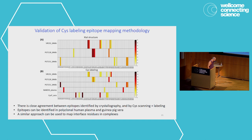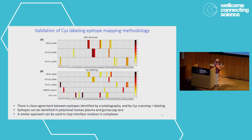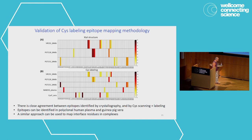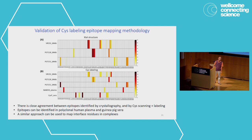This is the result when we did it with the HIV envelope. These are the epitopes from crystal structures for three different neutralizing antibodies, and these are the enrichment scores from our cysteine labeling experiment — they match up very well for all three antibodies. What we could do that you can't do with crystallography or cryo-EM is look in plasma and in neutralizing sera from small animals with antigens we had designed, to find out which epitopes were targeted. There is close agreement between epitopes for monoclonals identified by crystallography and by cysteine scanning, and we can identify epitopes in both polyclonal human plasma and guinea pig sera. Similar approaches can also map interface residues in protein-protein or protein-ligand complexes.